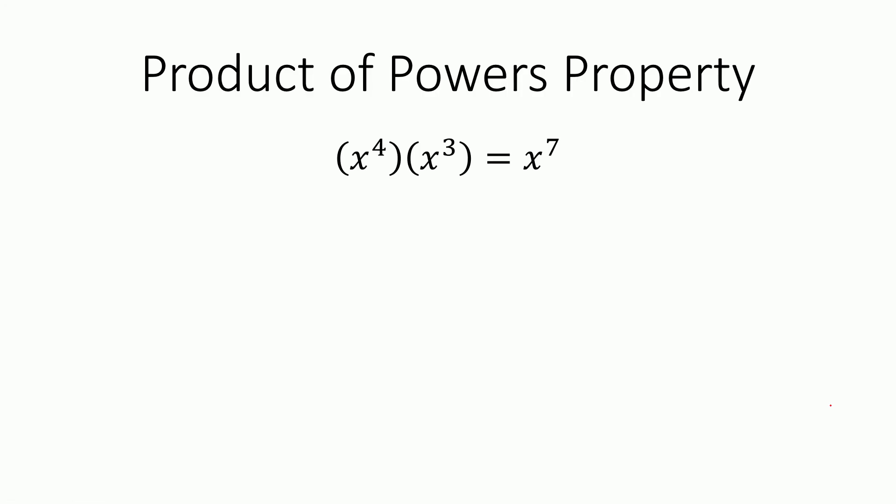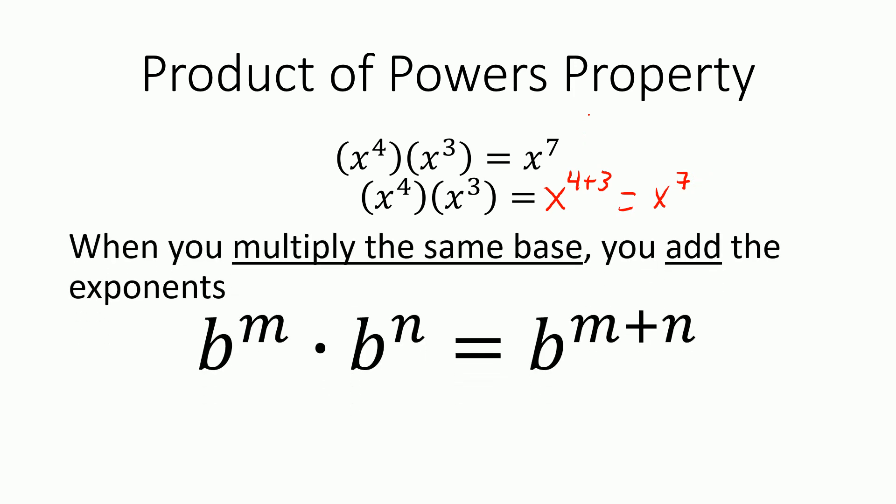So when we look at x to the fourth times x to the third, we found out that it equals x to the seventh. So the question is how, without expanding it, how can we make that go quicker? Well, if you notice, four and three, if you add them together, you would get seven. So if you wrote x to the four plus three, that would be x to the seventh. And this is what's called the product of powers property. When you multiply the same base, you add the exponents. And generally, for any base b to the m times b to the n, you add the exponents.